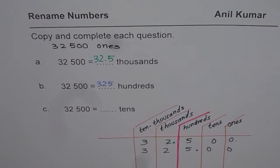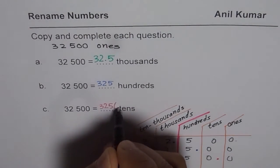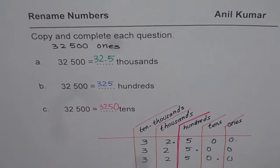How about renaming it as tens? In that case, what should we do? We should again write this number, three, two, five hundred, and put a decimal after tens. That is right there. So we get 3250. We have 3250 tens. So that is how we actually rename.